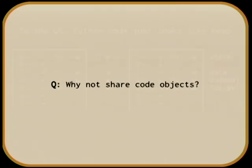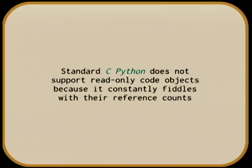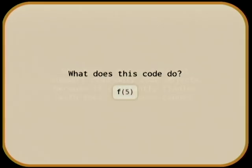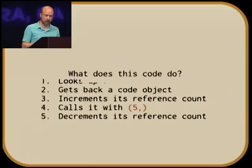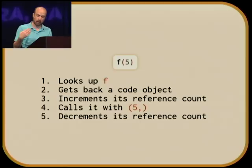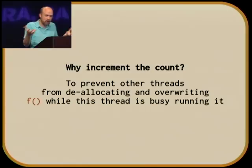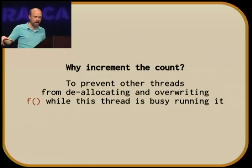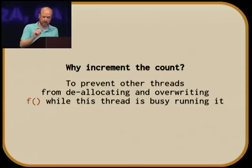Why don't we load Python code like a normal system library and share it — make them read-only? The big problem is reference counts. Standard CPython does not support read-only code objects because as you use them, it constantly fiddles with their reference count, which is how it remembers when to deallocate old objects. When you call function f with argument 5, it looks up f, gets back a code object, increments its reference count, calls it, and then decrements the count. The reference count prevents other threads from deallocating the code while it's running, but it also means reference-counted code objects can't take advantage of the OS sharing optimization.